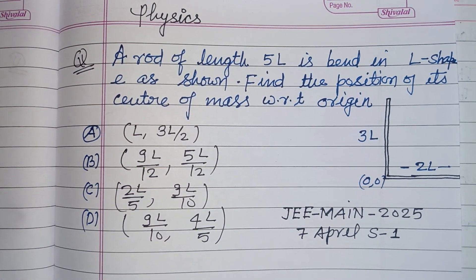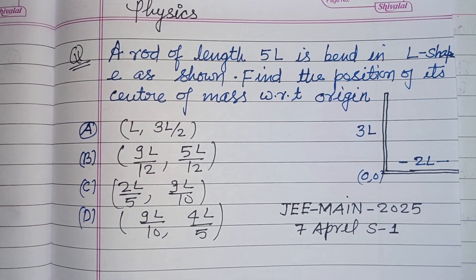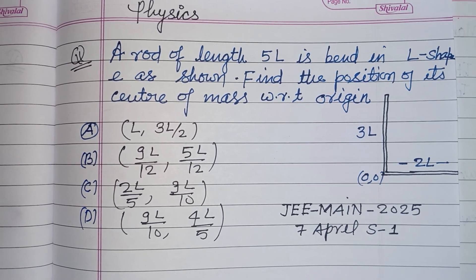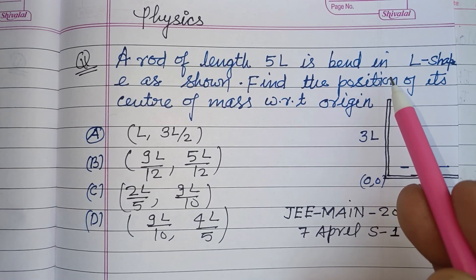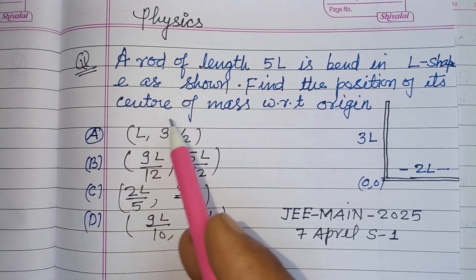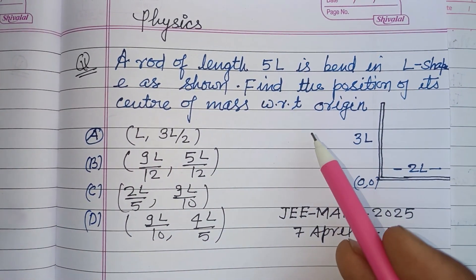Hello viewers, warm welcome to this YouTube channel. This is a question from JEE Main 2025, 7 April Shift 1. A rod of length 5L is bent in L-shape as shown in figure. Find the position of its center of mass with respect to origin.